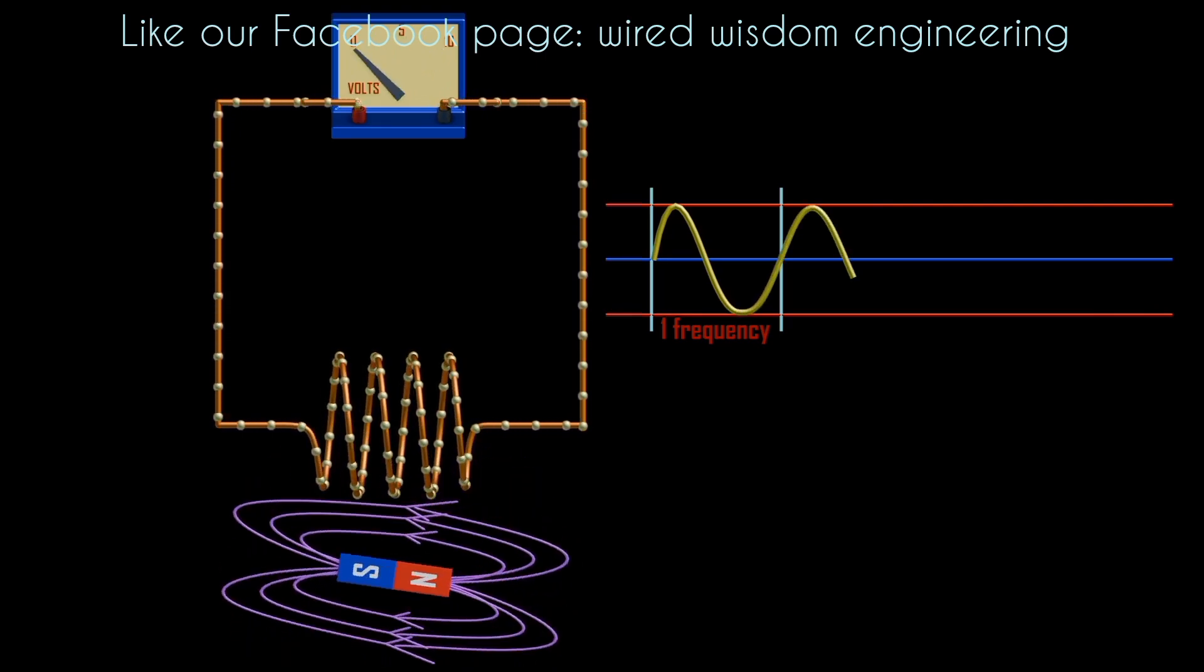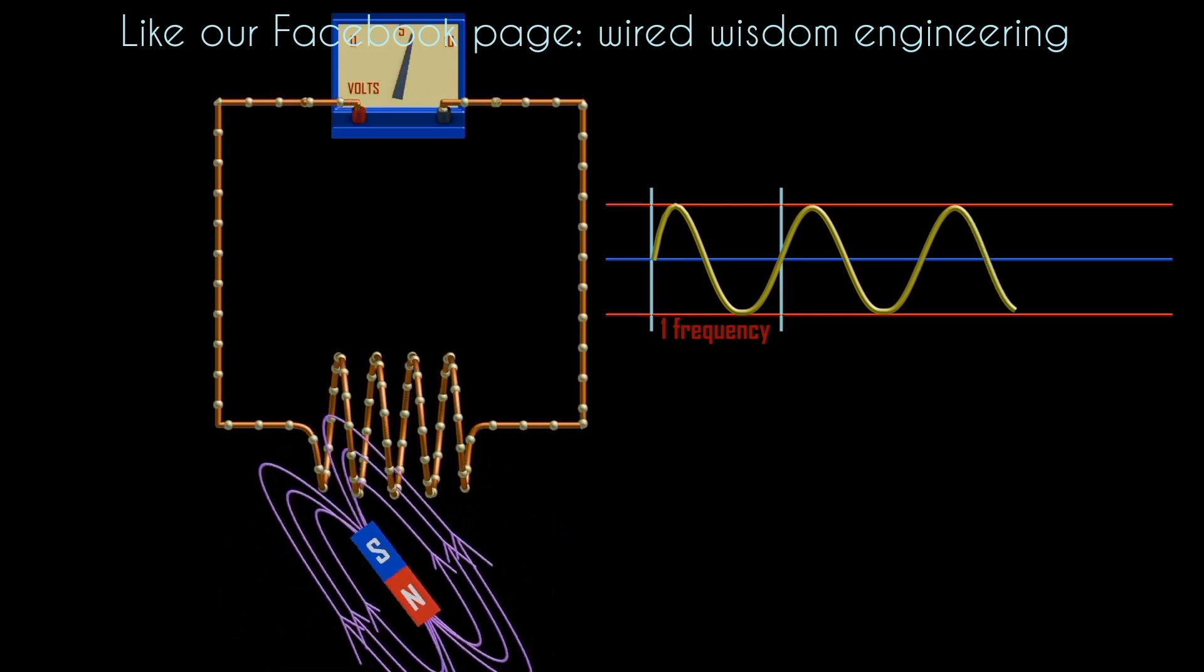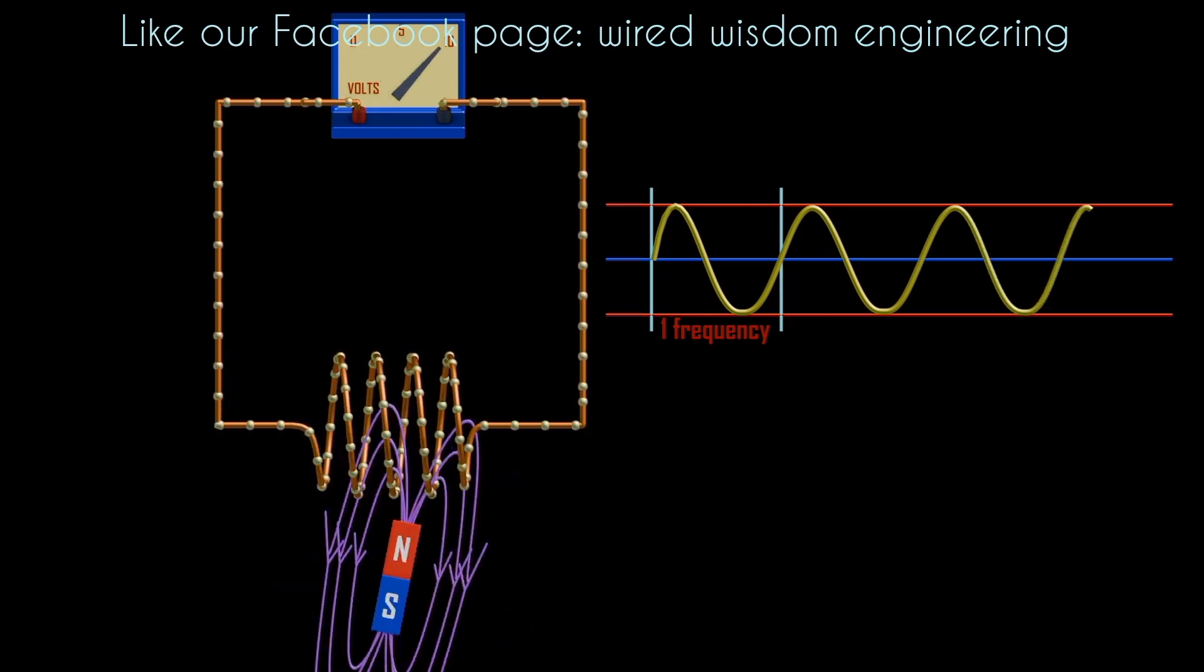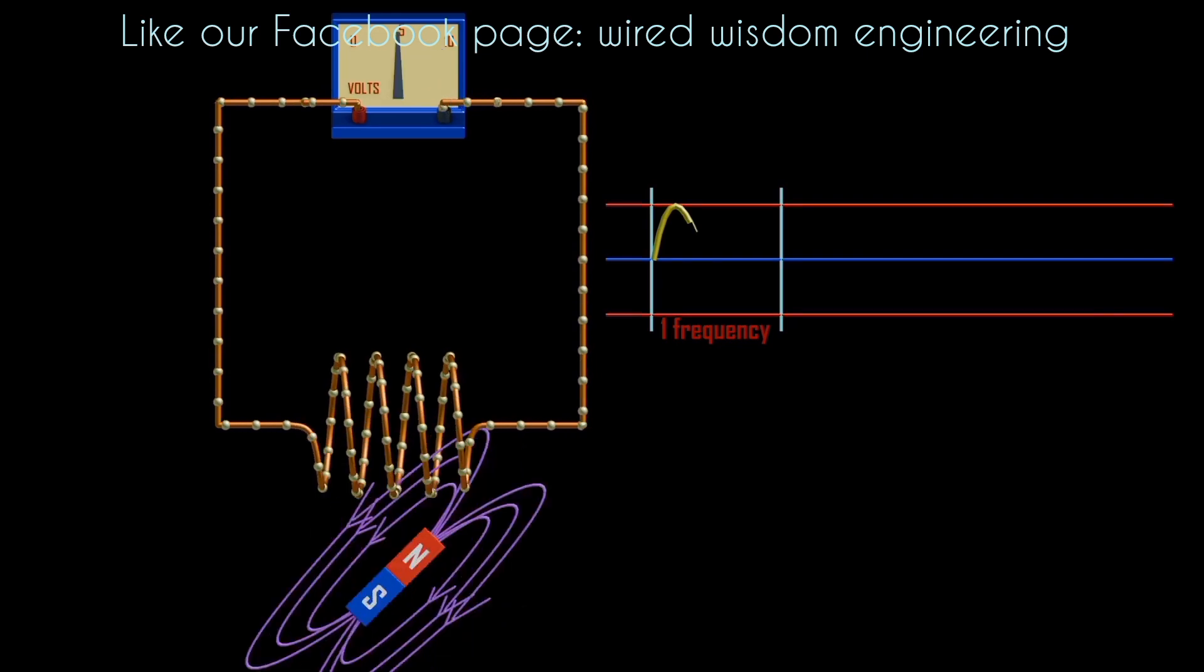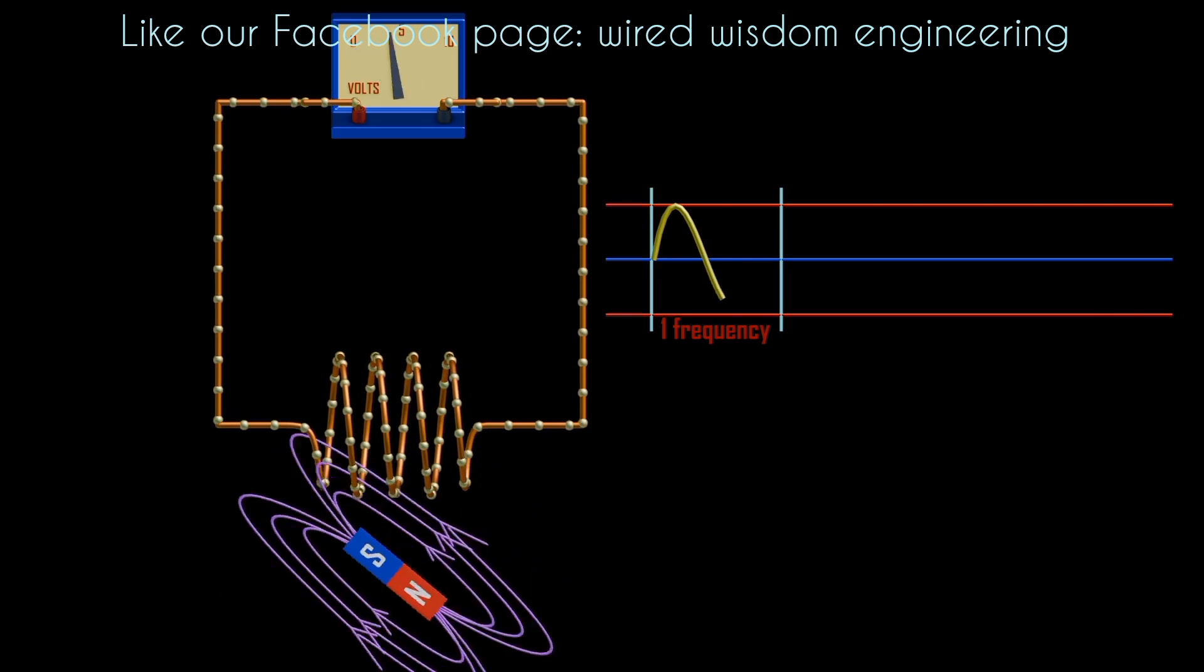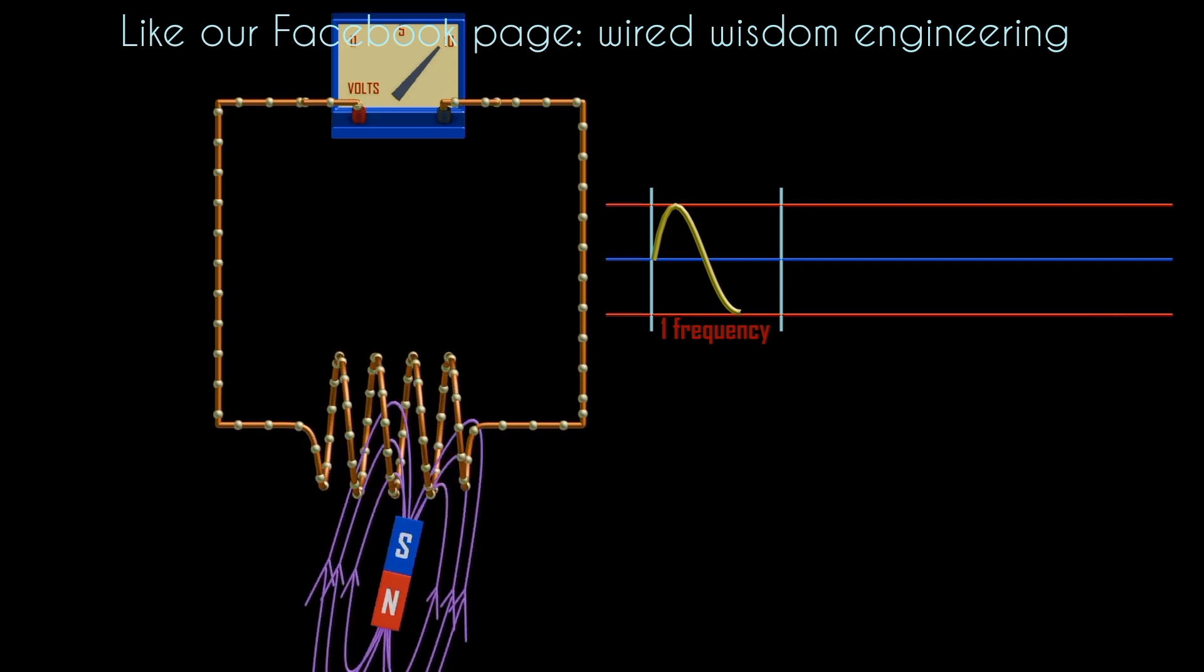When we use, for example, a permanent magnet, and it cuts the coil while rotating, it will form an alternating current. For instance, we know that the magnetic strength of a magnet is stronger at the pole. So, for example, when the south pole of a magnet is approaching, the current gradually increases to the maximum. Then when the south pole is moving away, the current gradually decreases.